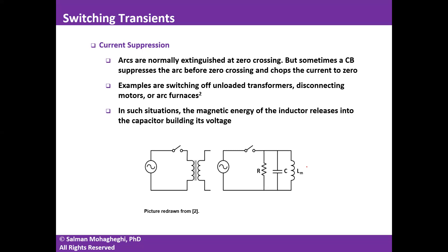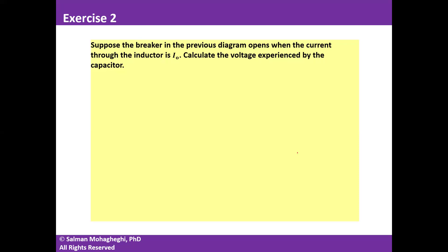Current suppression occurs in many situations: transformers under no-load conditions being disconnected, motors being disconnected, and operation of arc furnaces. During this time, some interesting transients occur. Consider an unloaded transformer being disconnected with non-zero current, meaning some magnetic energy is stored in the inductor, which will then discharge into the capacitor when the circuit breaker is opened. Please pause the video to calculate the maximum voltage experienced by the capacitor.